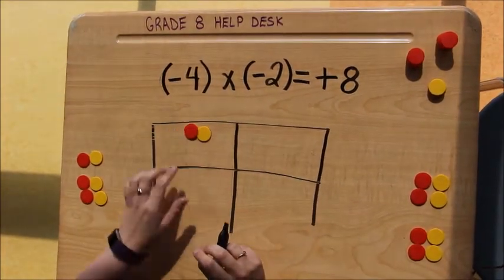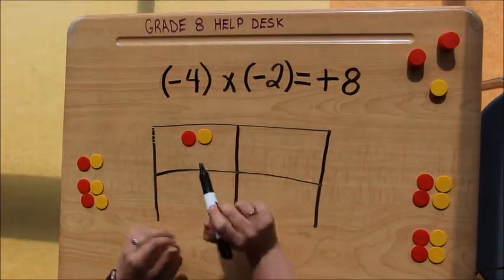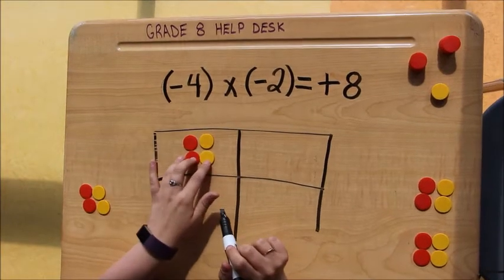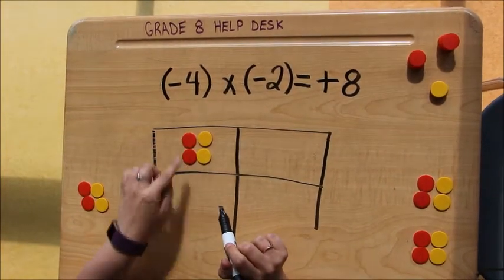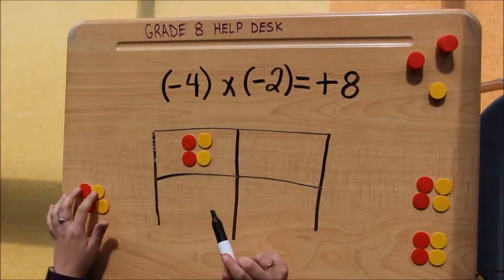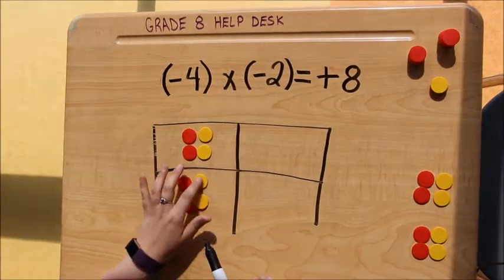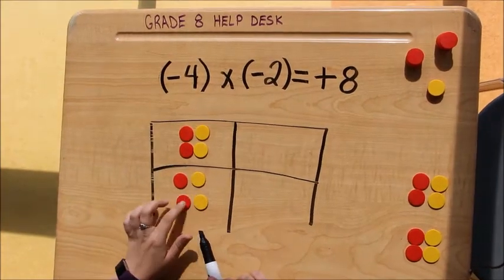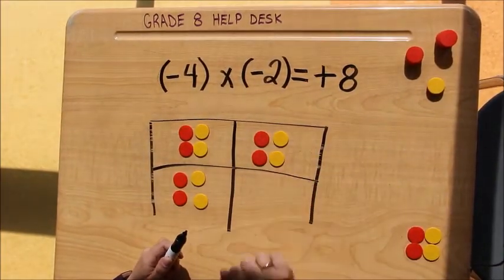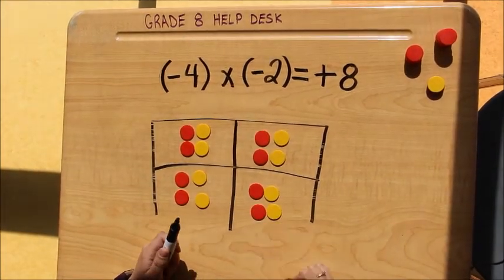In the first group I put in 2 zero pairs, so I can already see both of those 2 negative tiles. In the second group I put in 2 zero pairs. Third group, 2 zero pairs. Last group, 2 zero pairs.